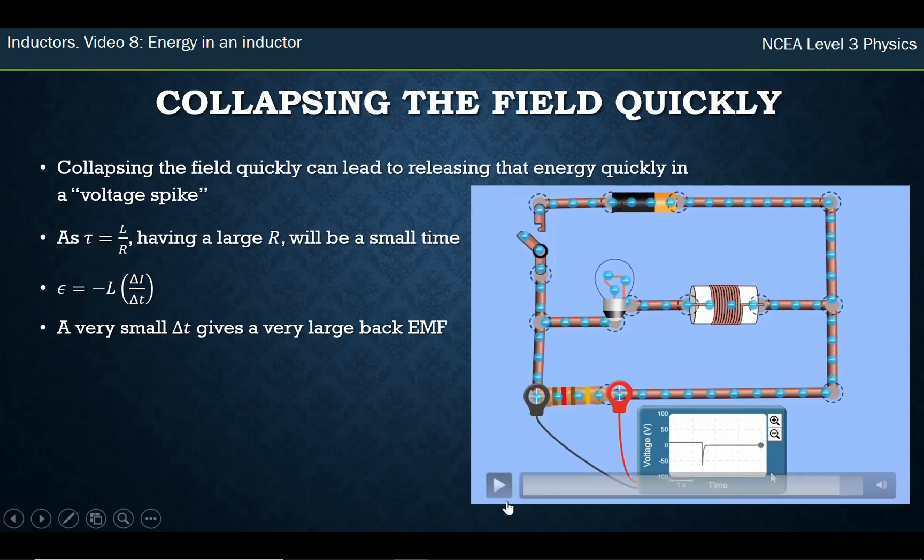I can pause this now. It happened much quicker. You can see the scale now is negative 50 almost to 100, and this has gone to about 70 volts. Before it was 10 volts, and now I've managed to crank it up just by changing the resistance to 70 volts.